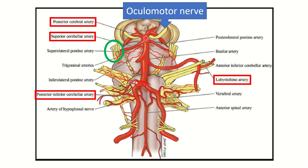The basilar artery ascends upwards through the pons and when it ends at the pons, it terminates into two branches — the posterior cerebral arteries. In its pathway it gives some other branches, such as the posterior inferior cerebellar artery, also known as PICA.